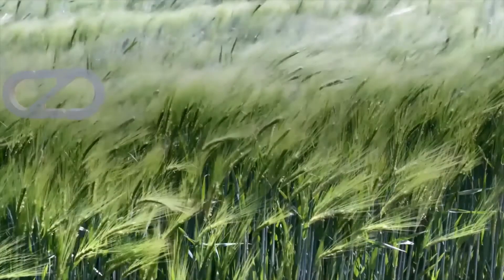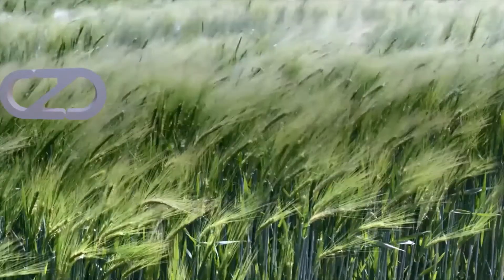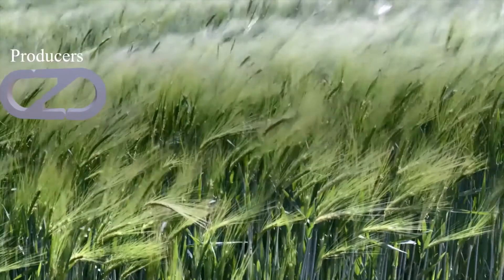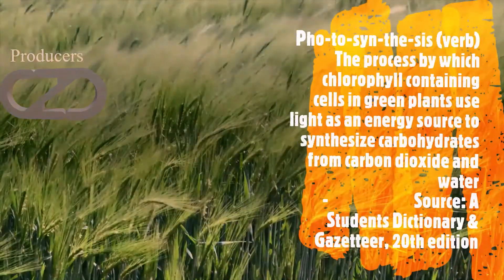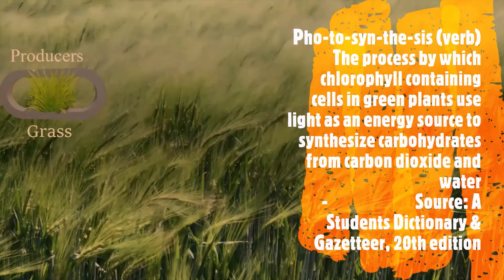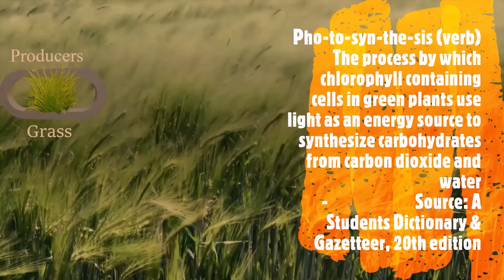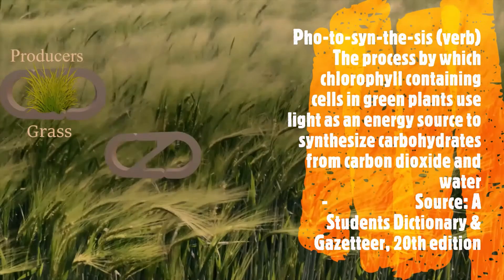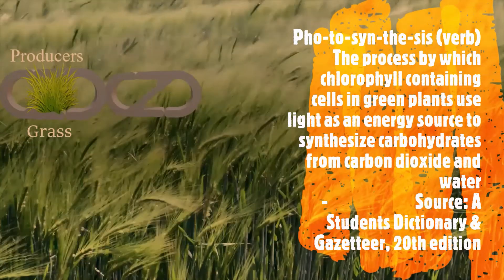All food chains start with producers. Plants are in this category because producers utilize a process called photosynthesis to create their own food.